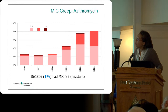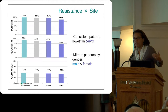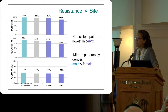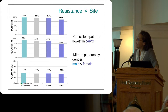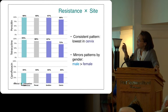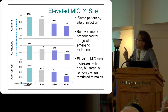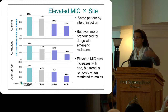We also see a trend by site: we have the fewest problems with cervical specimens, and the highest resistance challenges with anal specimens. The order from highest to lowest MICs is: rectal specimens, then throat, then urethra, then cervix. This same pattern holds for both ceftriaxone and azithromycin — rectal sites have the highest MICs, then throat, then urethra, then cervix.